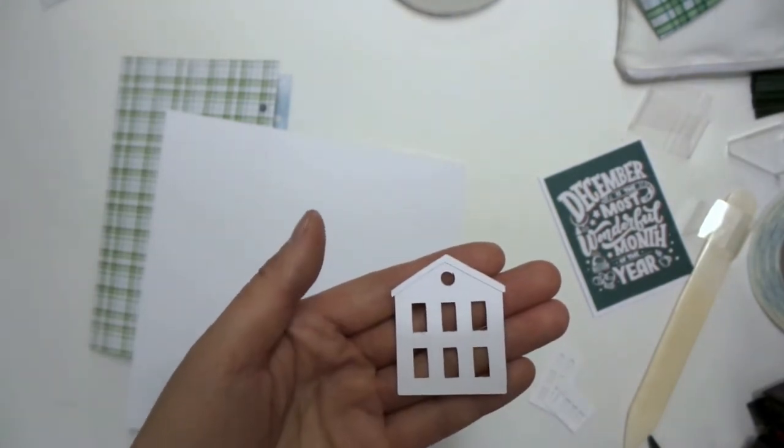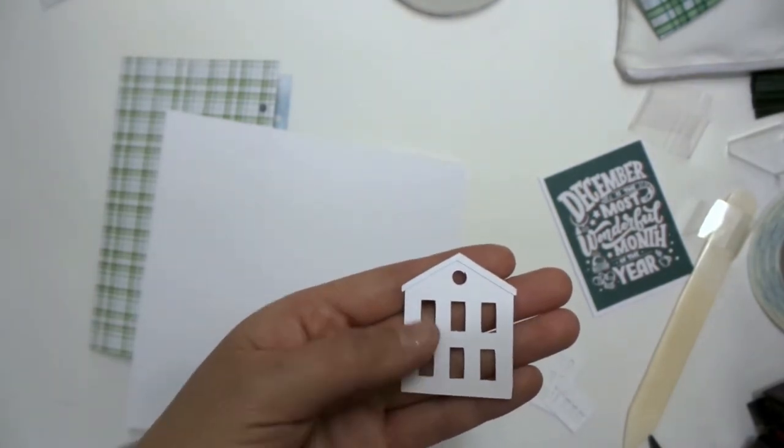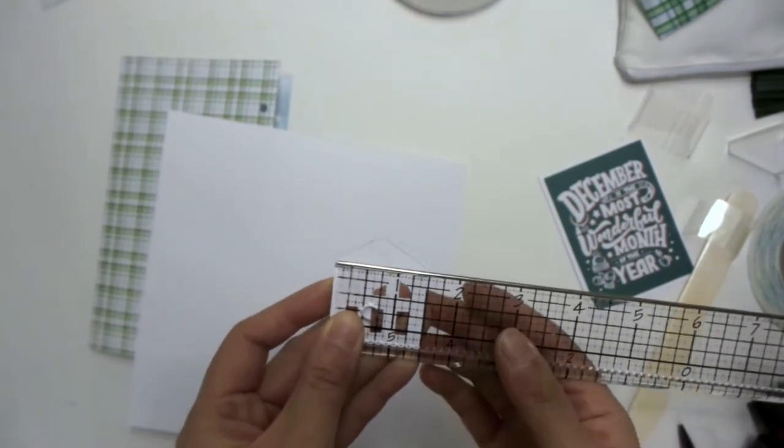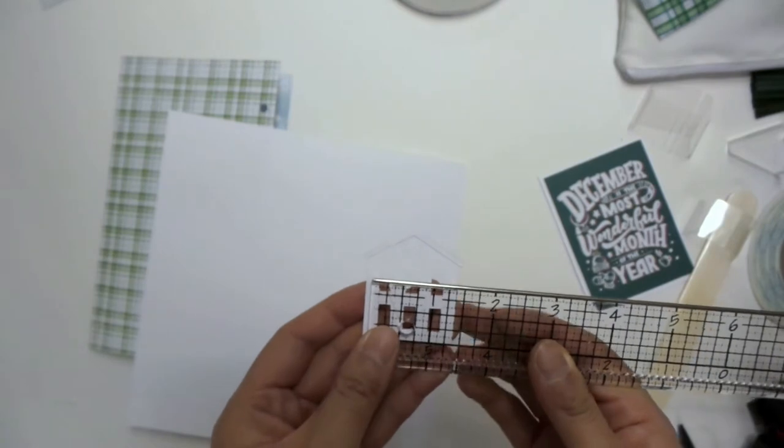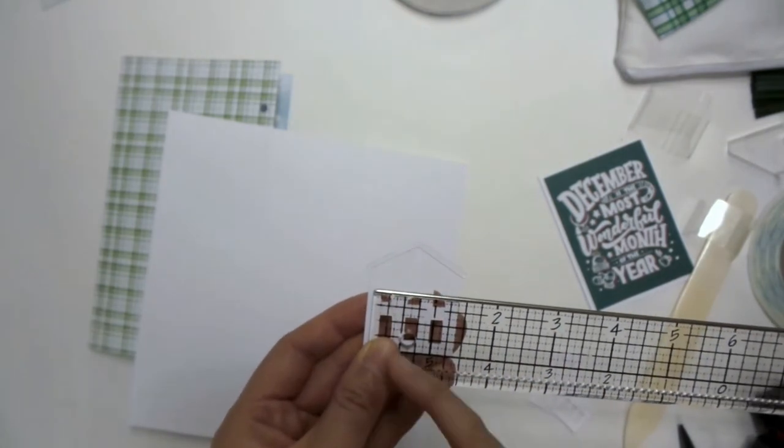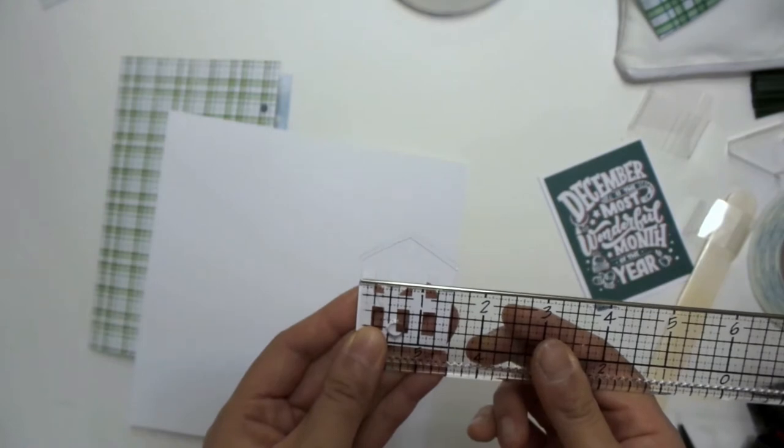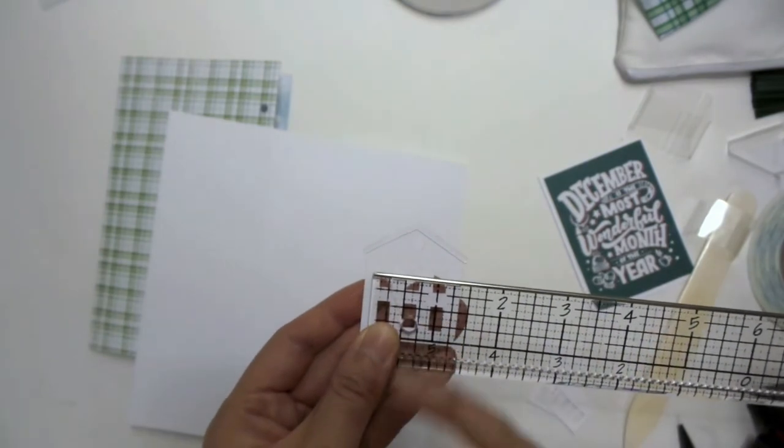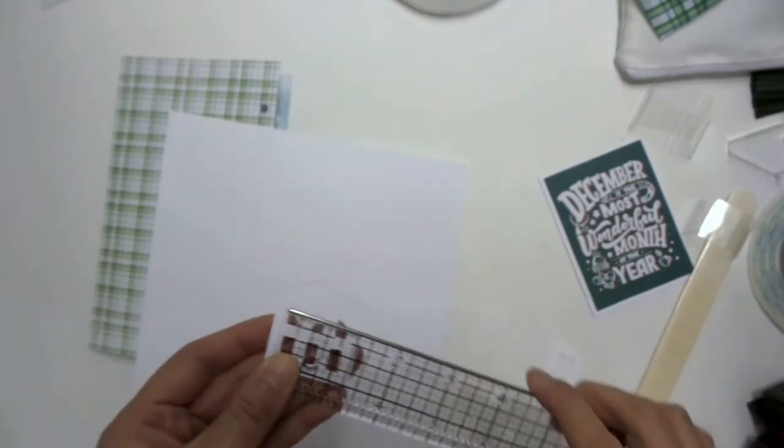So basically what I'm going to do, the measurements will depend on the size of the die cut that you're using. But we want to measure the width of this piece and we want to stay within these two edges here. So this piece measures about one and a half inches. I'm going to go slightly in and make that one and a quarter inches.